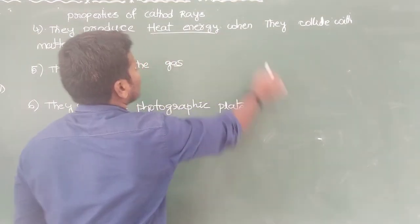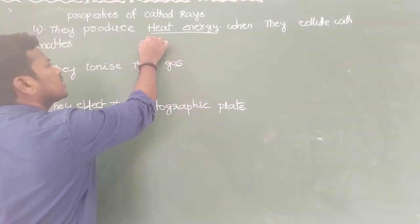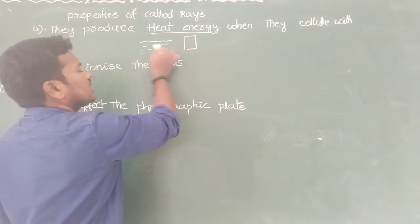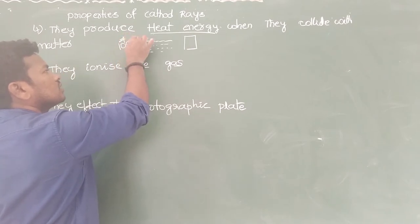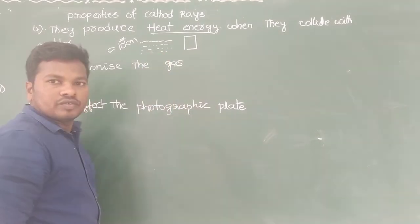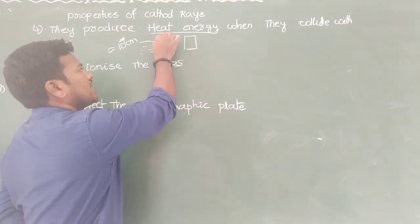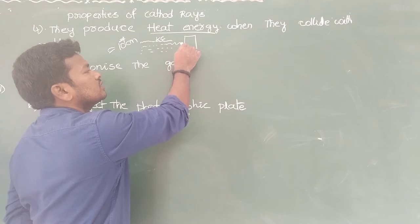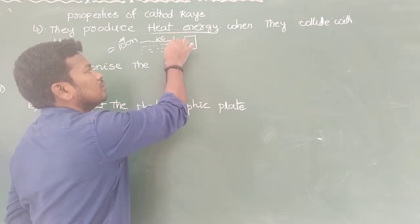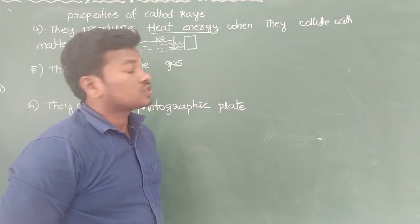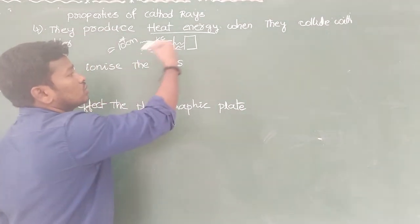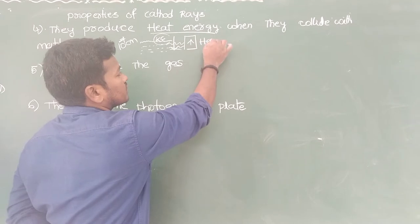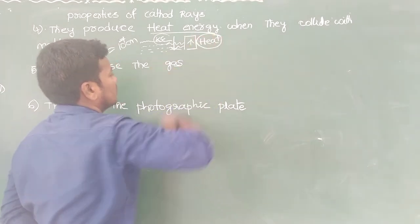Fourth, cathode rays produce heat energy when they collide with matter. On the path of the cathode rays, if you place any material, the rays are travelling with high speed — approximately 10 to the power of 7 cm/s — with high kinetic energy. When they collide with the material, the kinetic energy decreases. According to the law of conservation of energy, the kinetic energy is converted into another form — that is heat energy.